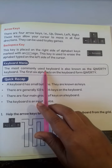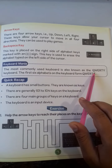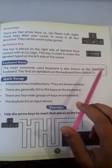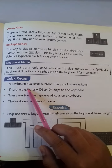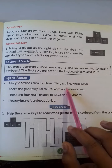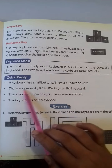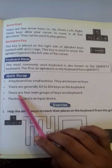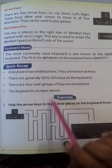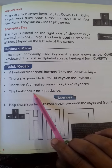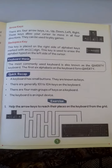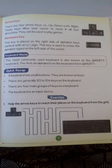The most commonly used keyboard is also known as the QWERTY keyboard, named after the first six alphabets on the top row. Quick recap: a keyboard has small buttons called keys. There are generally 101 to 104 keys, and they are divided into four main groups.